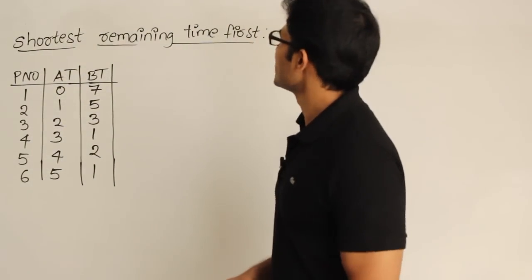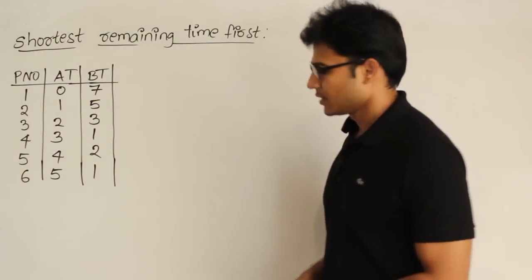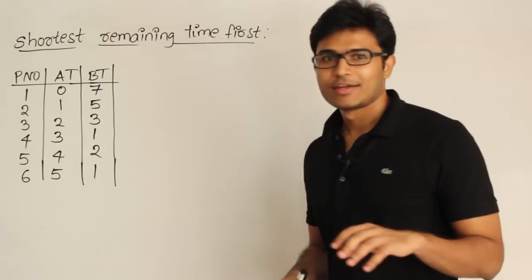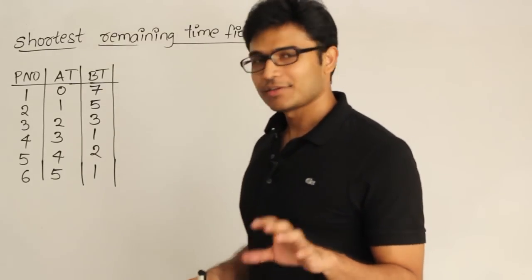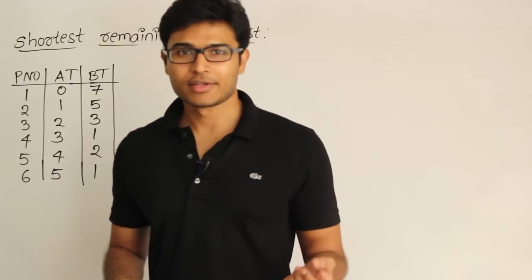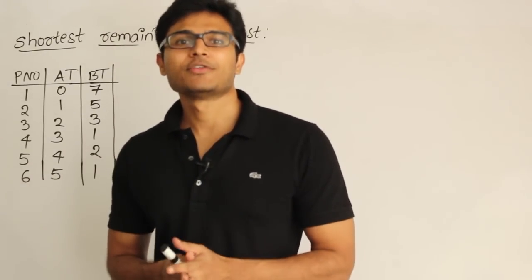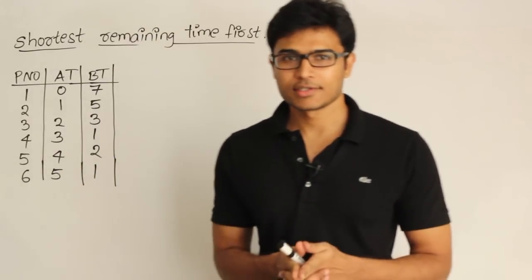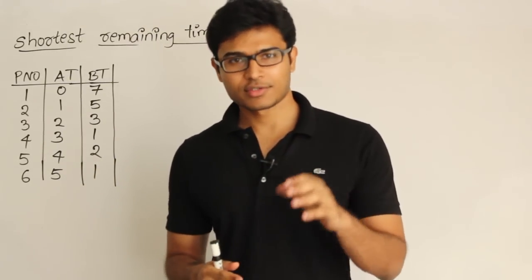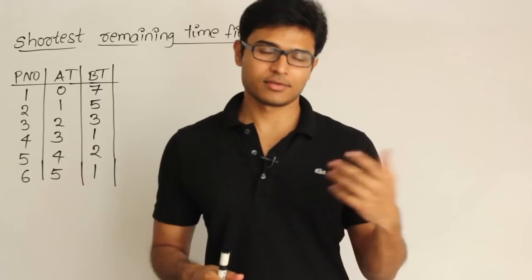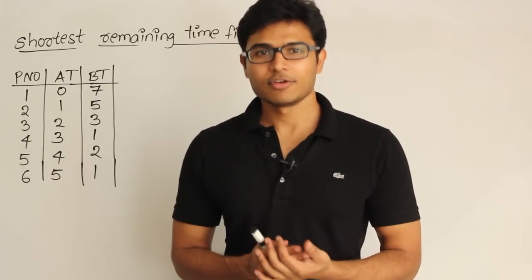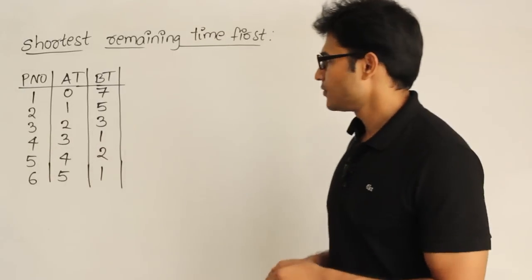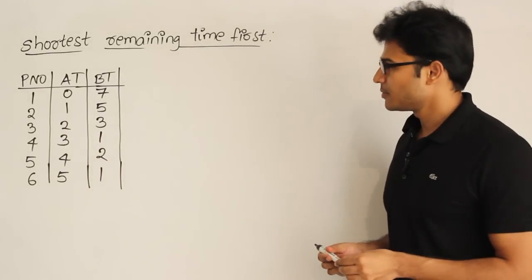Now let's see Shortest Remaining Time First. The name itself says we are going to take the shortest jobs, but in a different way. It is based on burst time criterion and the mode is preemptive, which means even when a process is running we are going to stop it and schedule the other one if the situation calls for it.